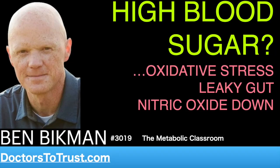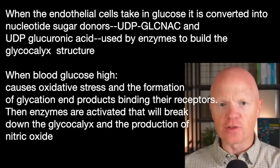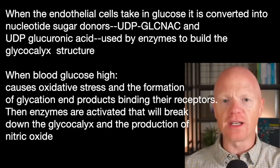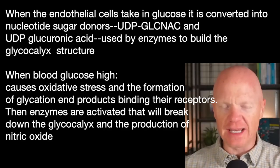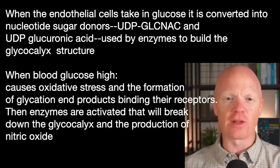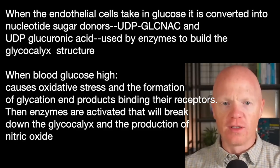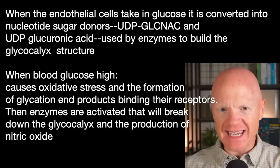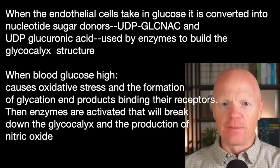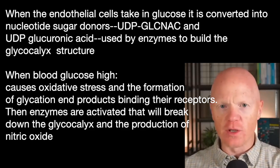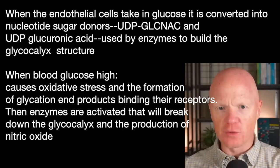I alluded to this earlier, but you might be wondering how blood glucose fits into this picture. Inside the endothelial cells, when they take in glucose, that glucose gets converted into what are called nucleotide sugar donors — molecules like UDP-GlcNAc and UDP-glucuronic acid — that enzymes will use to build the structure of the glycocalyx.